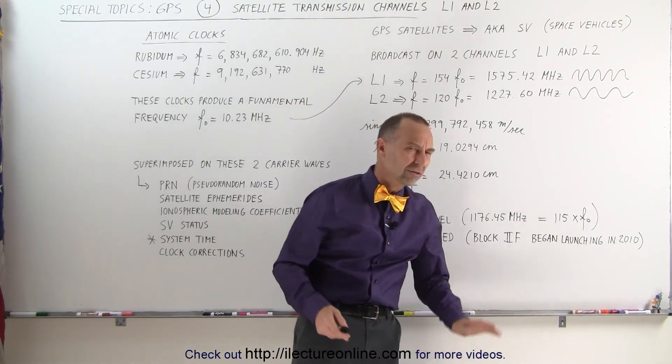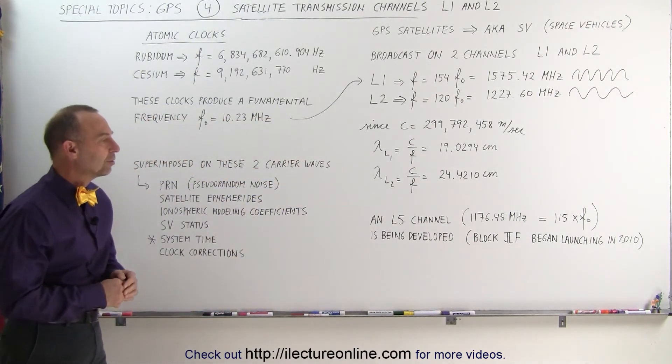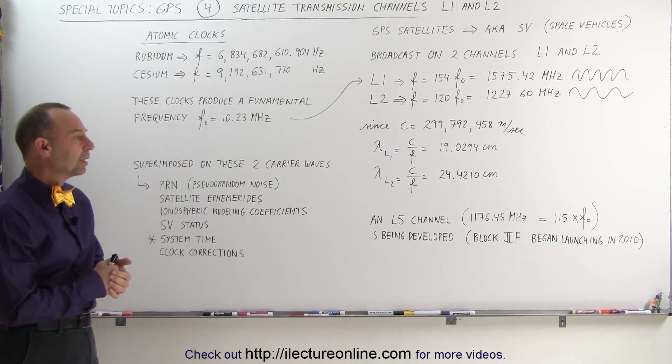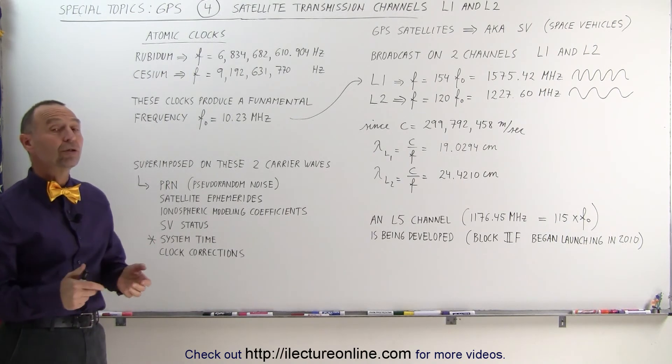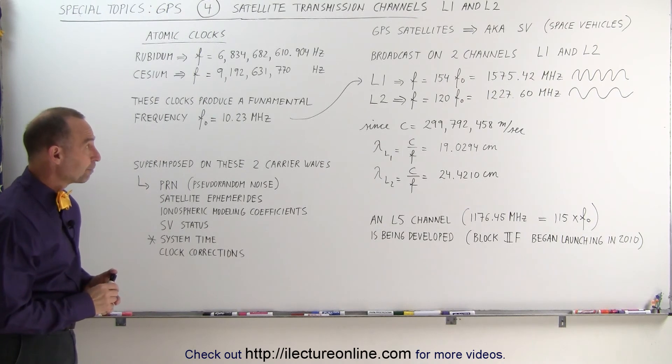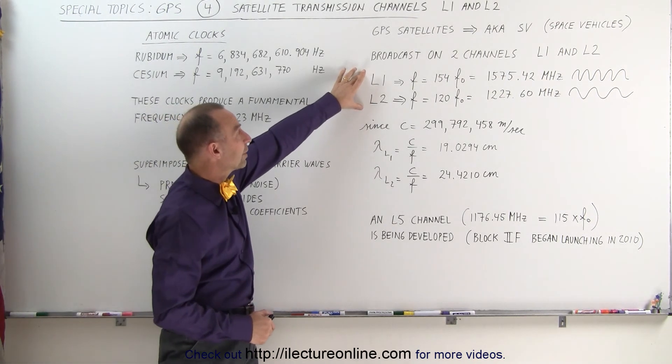Those began launching in 2010, and I think at this point we have about 10 or 11 of those in space. That capability will give us much better accuracy for civilian use in GPS.